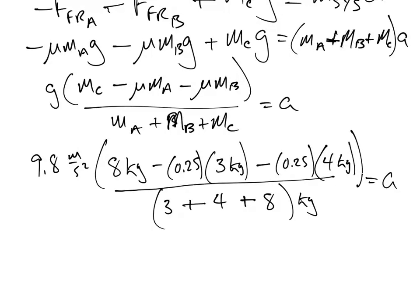So we've got 8, enter. 0.25, enter 3 times. Subtract. 0.25, enter 4 times. Subtract. 9.8 times. And then 3 plus 4 plus 8 is 15. 15 divided by. Make sure I did that one right. So now we've got an acceleration of 4.08 approximately meters per second squared.